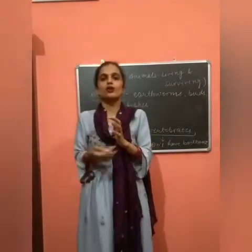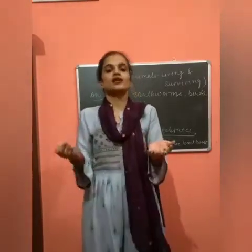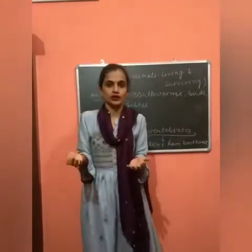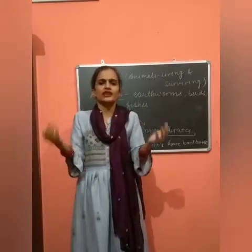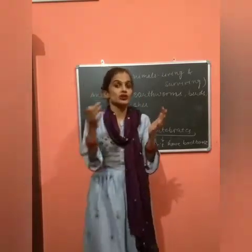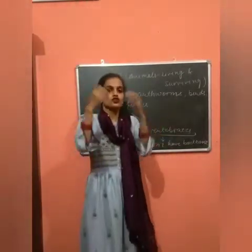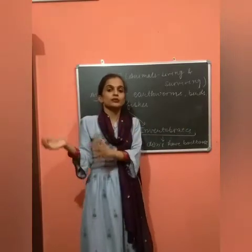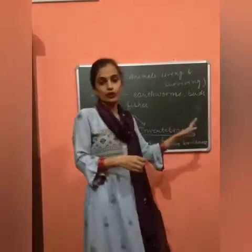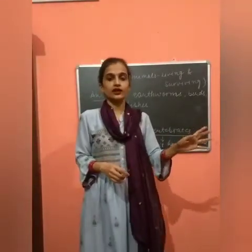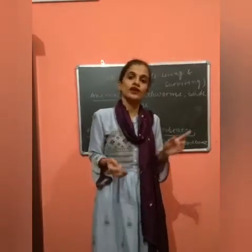Invertebrates include animals like insects and worms - these animals do not have backbone. About 90% of all the animals are invertebrates, meaning they do not have backbone. Examples include insects and earthworms, which are different kinds of invertebrates.